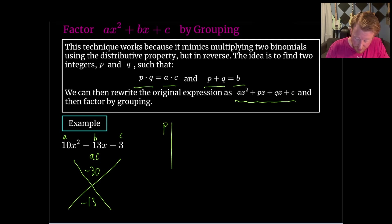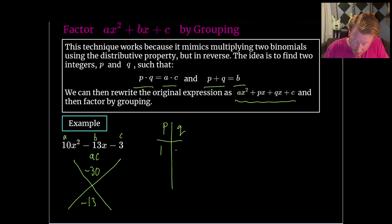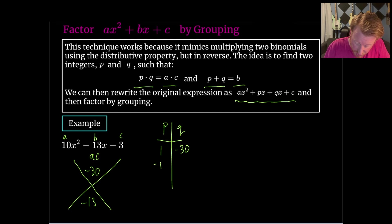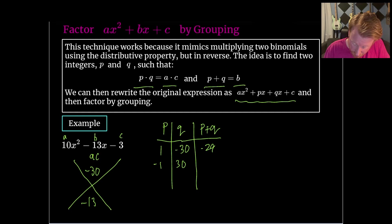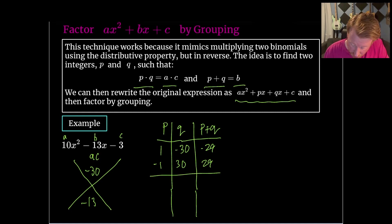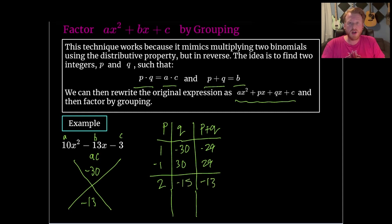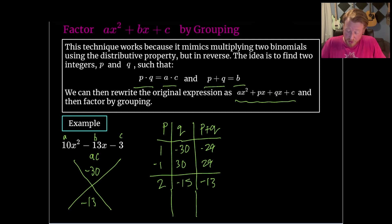We could come off to the side and make a little chart with p and q. What about 1 and negative 30? If we add those we only get negative 29, so that won't work. Same with negative 1 and positive 30, which gives positive 29. What about 2 and negative 15? If we add those together we get negative 13 — there it is! We no longer need to keep listing factors of negative 30. We've found p and q that multiply to negative 30 and add to negative 13.